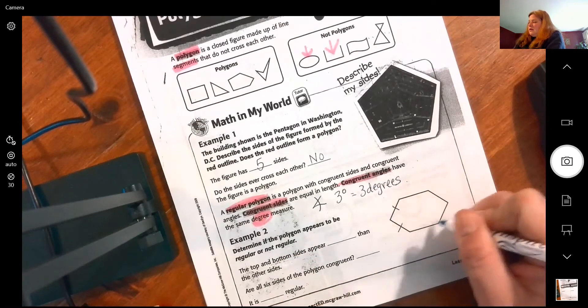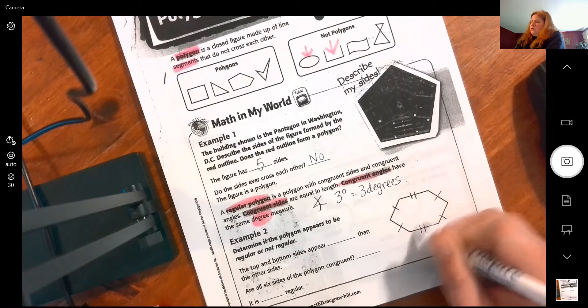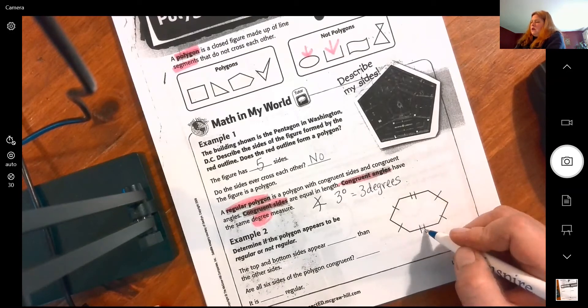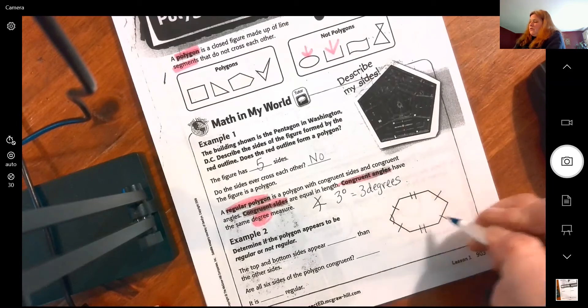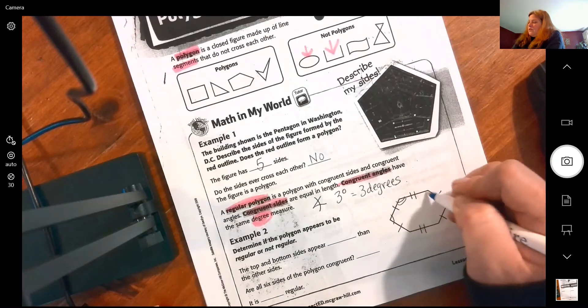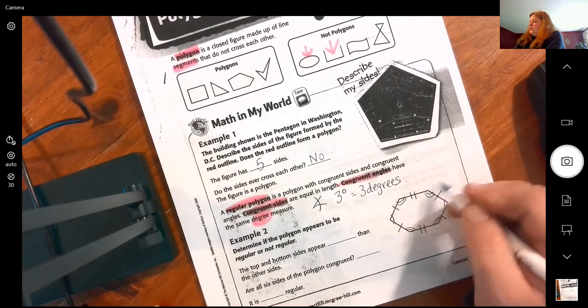See how I put two lines there? That's to show that these are congruent. I have same angles but I have different angles. So you can see how the number of lines or number of arcs shows you which ones go together.